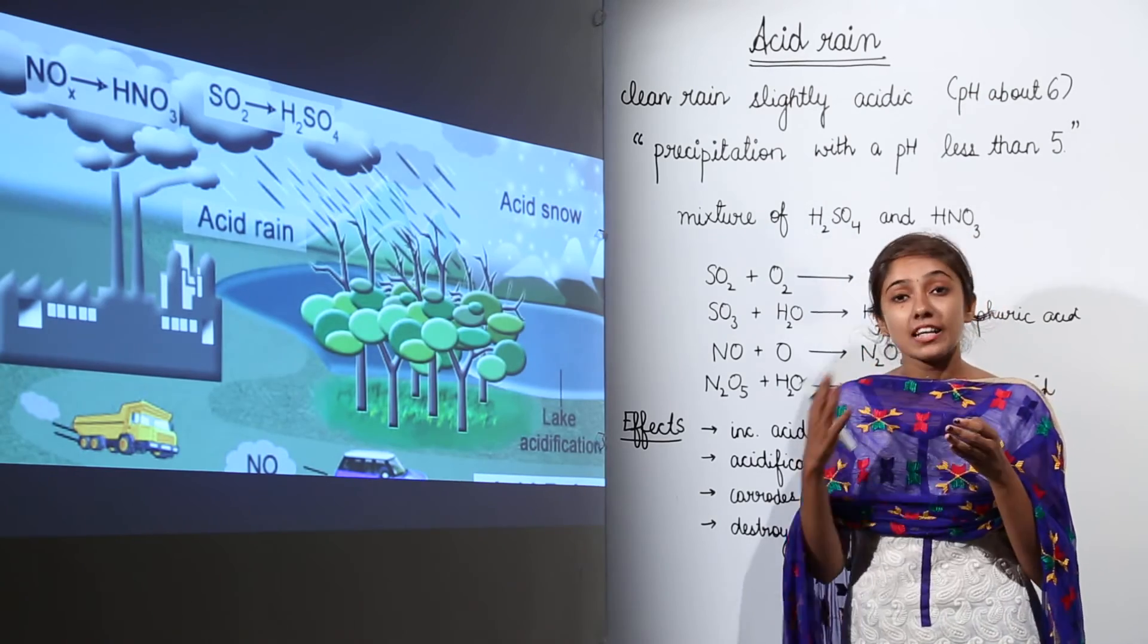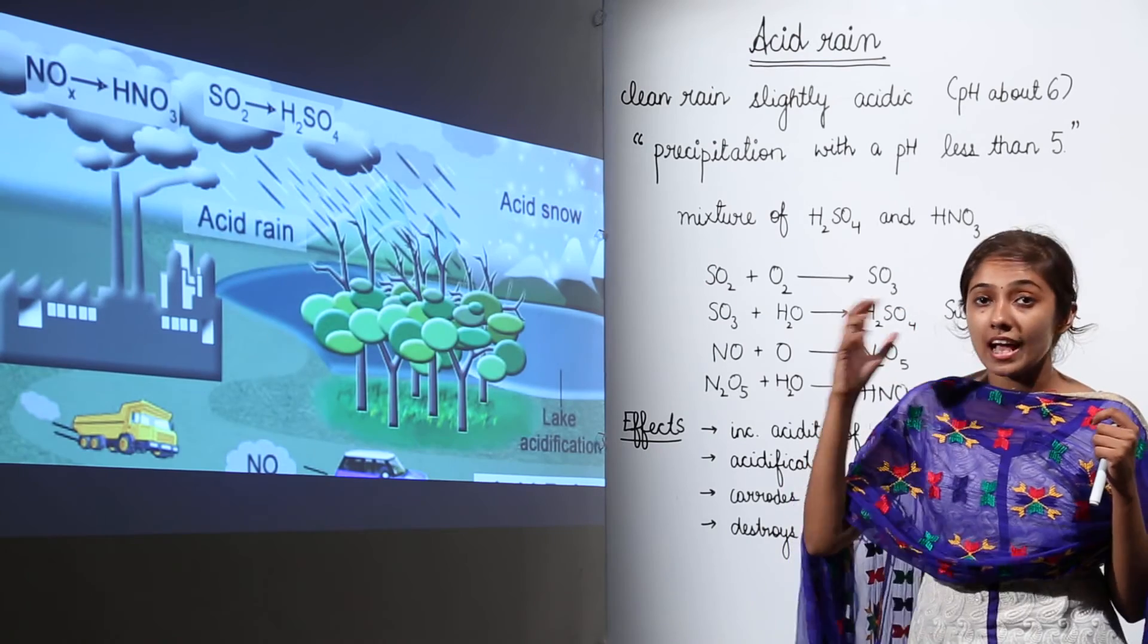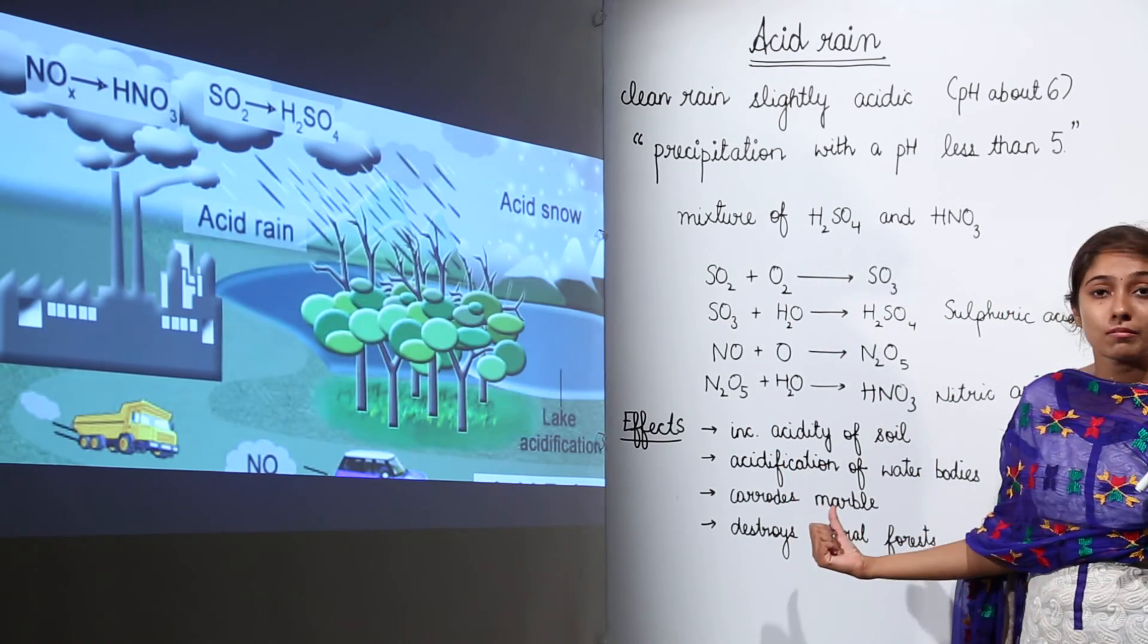Because near Agra there are many industries, because of which the rain over there which falls on the marble is quite acidic and it is leading to the corrosion of that marble.